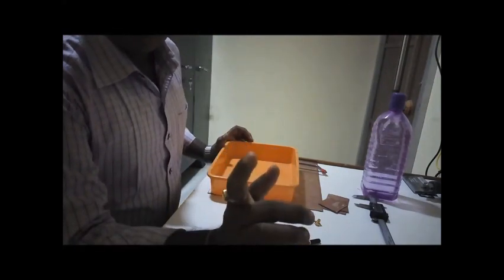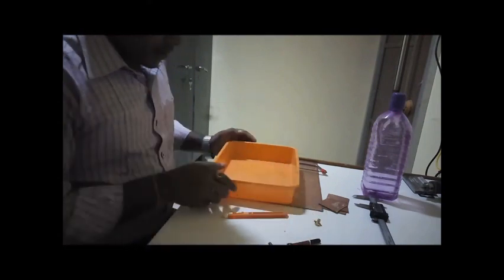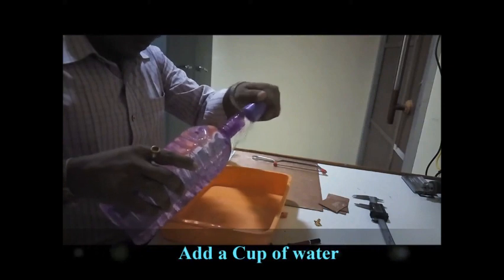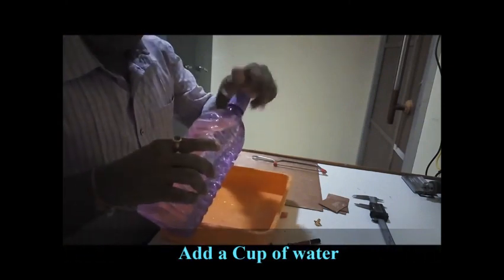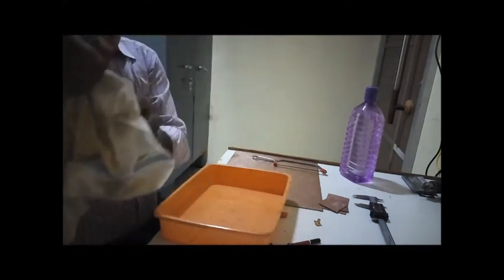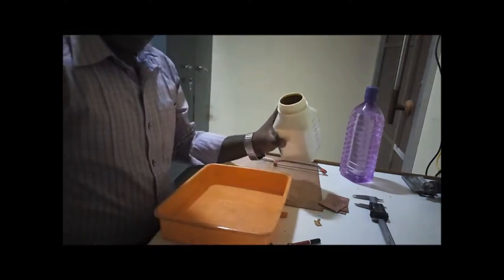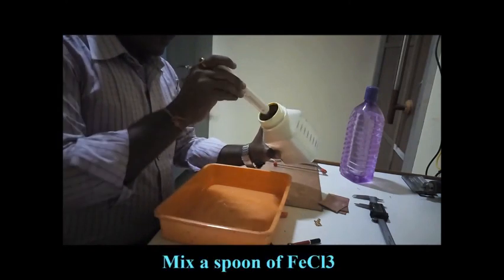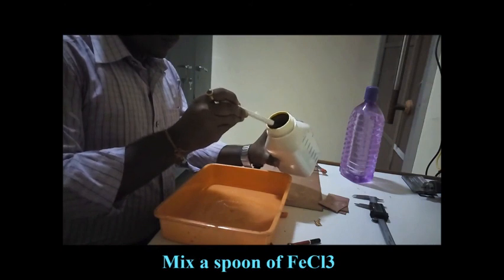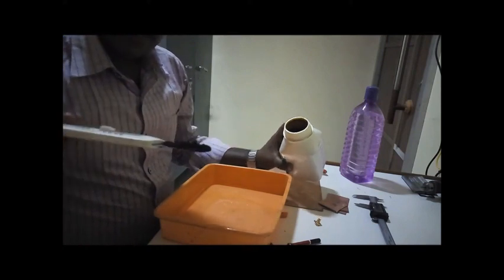For etching, we require a solution made of ferric chloride and water. First, add some plain water, and after that, add some ferric chloride here. The solution is prepared for basic etching.